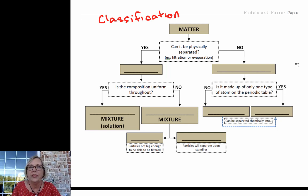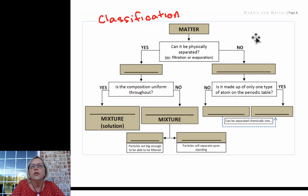The first question I might ask is: can this substance be physically separated to get a different part, two or more components? If it can be physically separated, it would be considered a mixture.